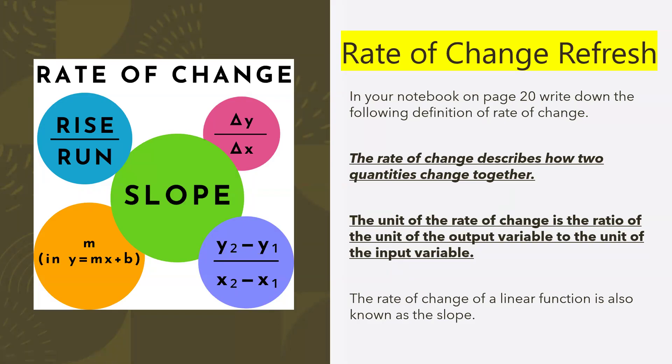Rate of change refresh. What you were doing on the Desmos Explore activity was hopefully getting your brain back to the idea of what rate of change is. This is what you learned about rate of change. All the little circles, essentially the heart of it all, it's called slope. If you feel like these are things you need to recall, then this is the first thing that you'll be writing down on your page 20.